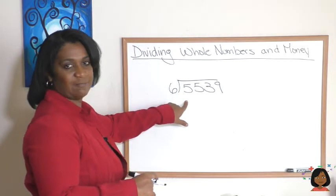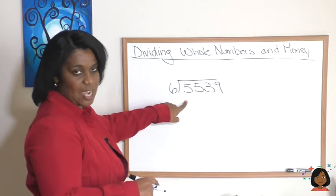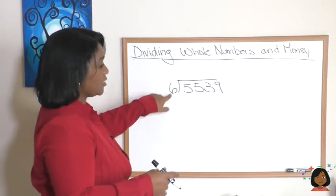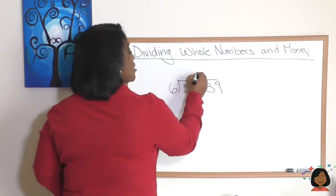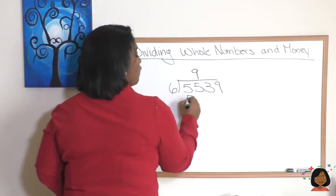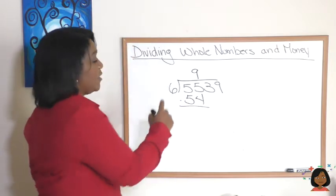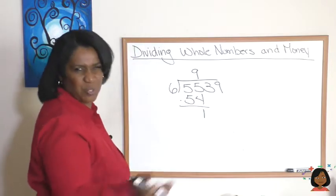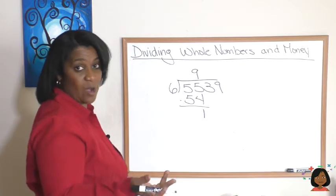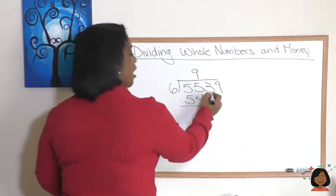Six goes into 5 how many times? Zero times. So we keep going. Does 6 go into 55? Yes, it does. It goes in 9 times. So 9 times 6 is 54. We write it down and we subtract. 5 minus 4 is 1. 5 minus 5 is 0. So we don't have to write it. And now you might know that we bring down our 3.